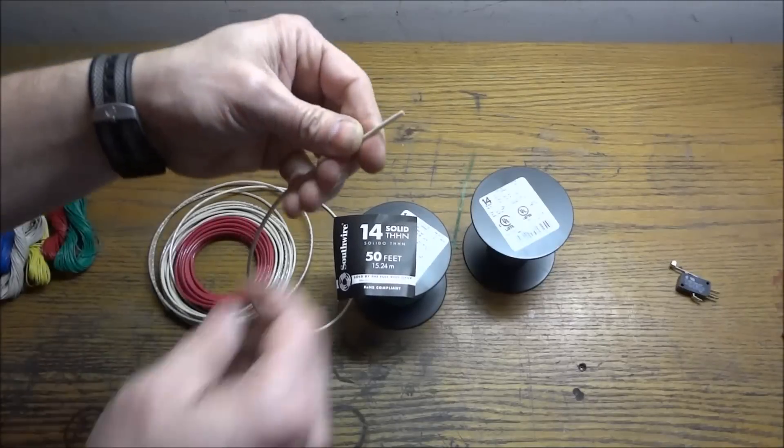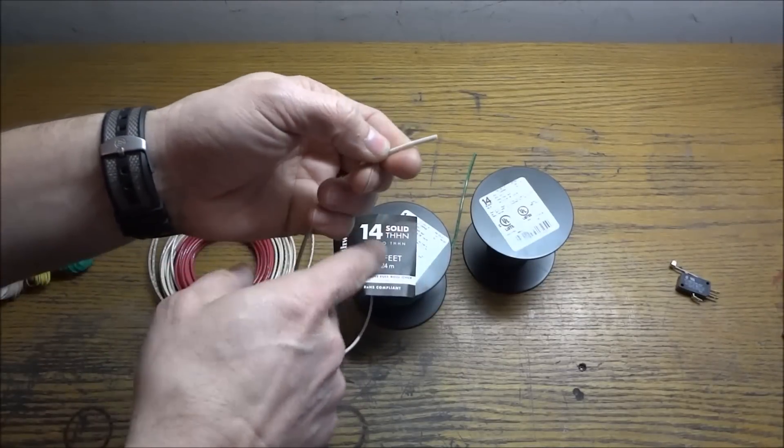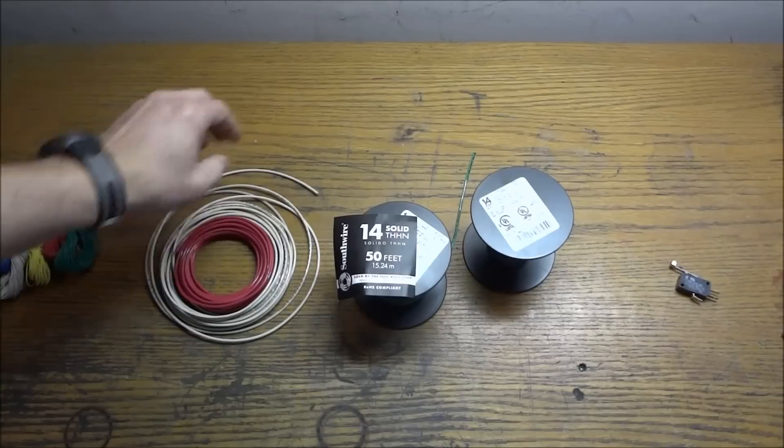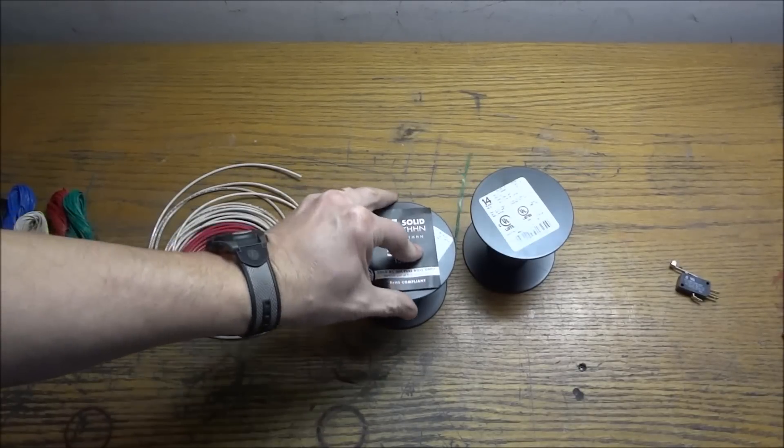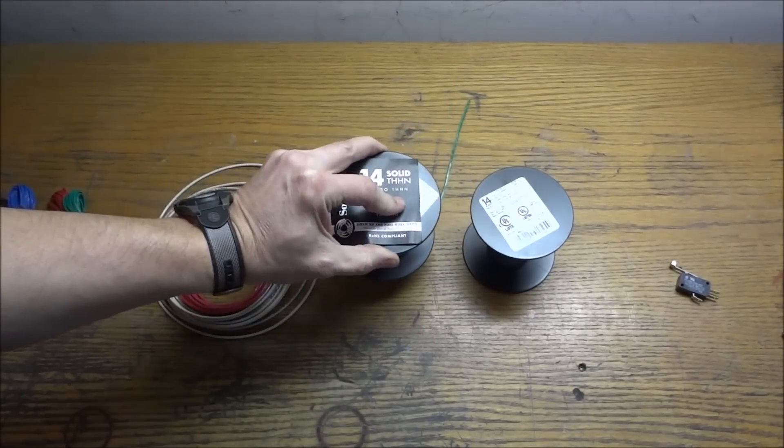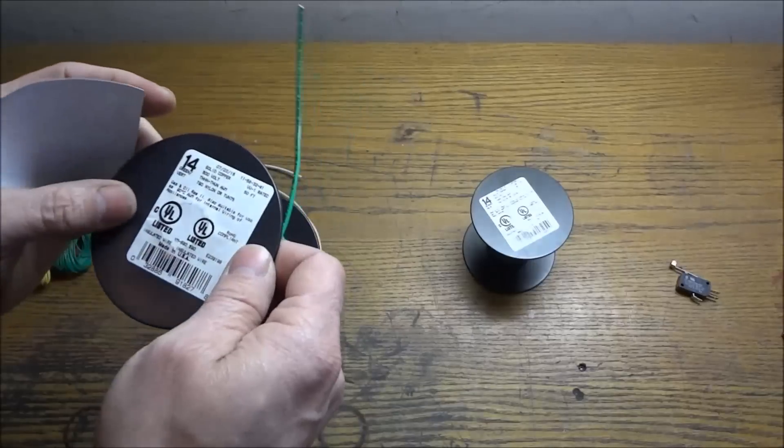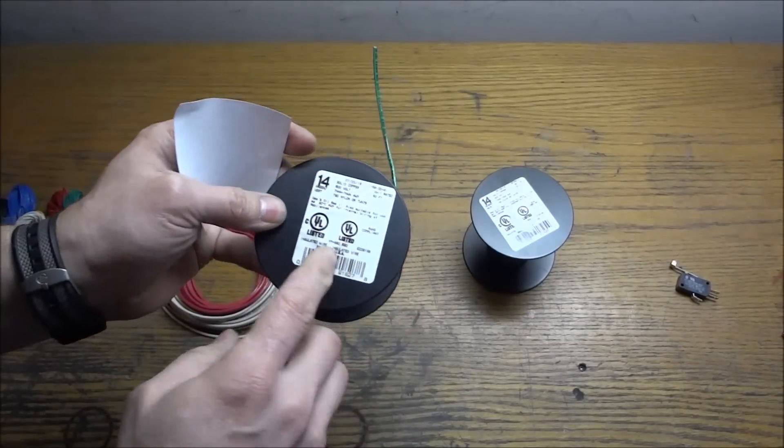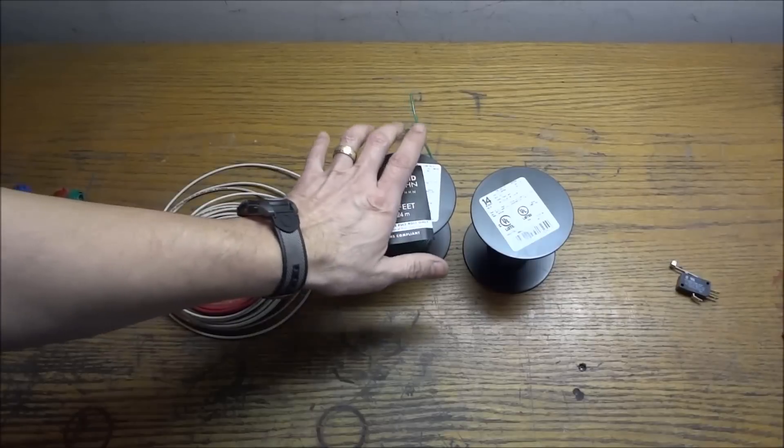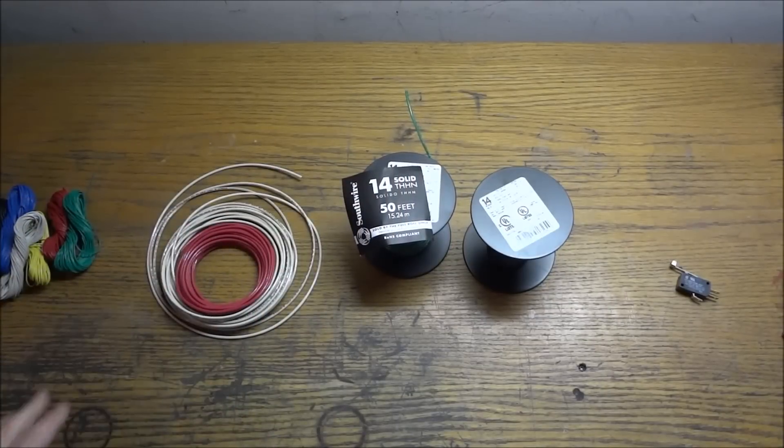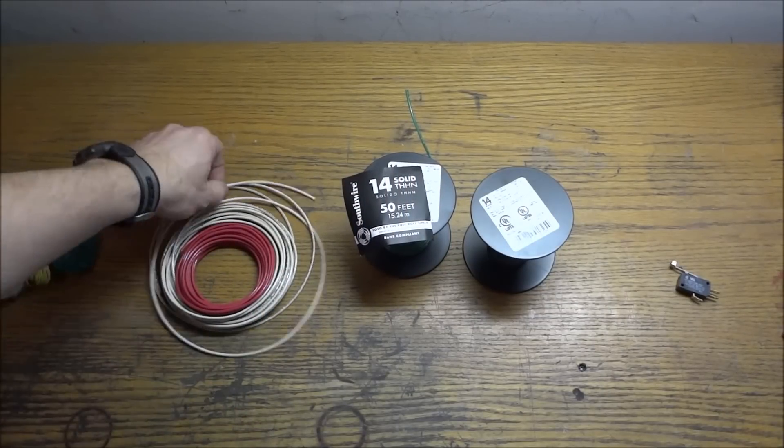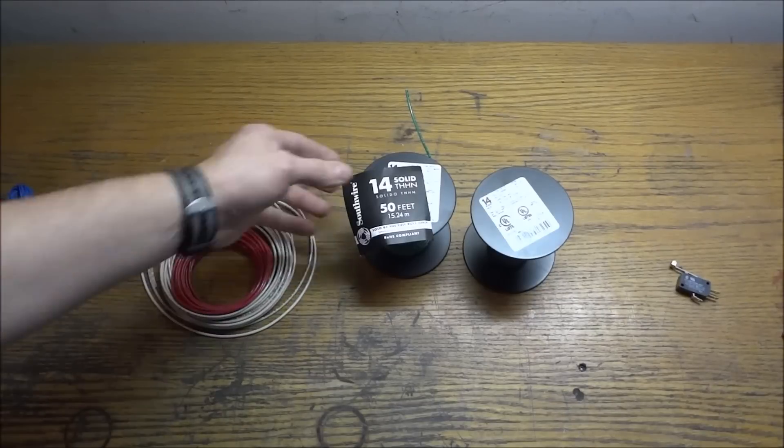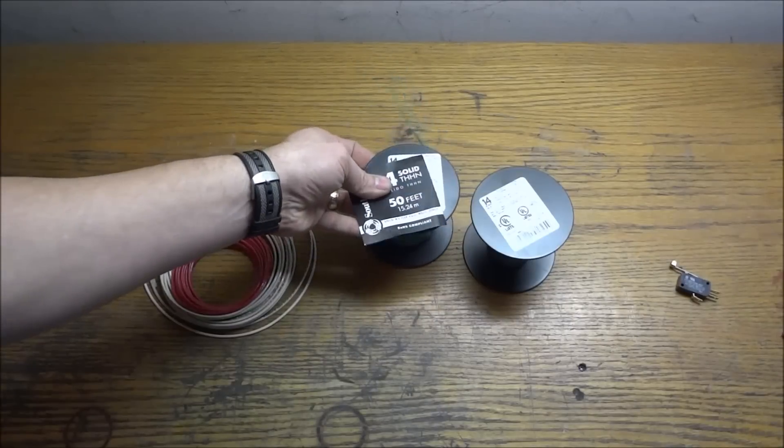I like using the solid core because you don't have to worry about stray wires. If you do use the stranded then just tin the end of it. That's what I do and it keeps everything nice and tight and tidy together. You can use 16 gauge inside the panel. But I have some 14 gauge here that I'm going to run to my outlets. But for your control circuit we're not going to be pulling a lot of amps so you can use 16.